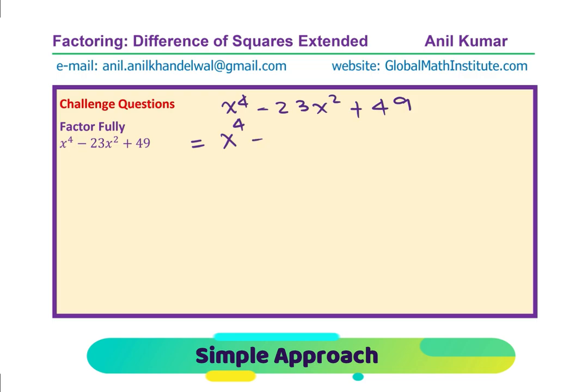One being 7 times 2 which is 14, right? So 14 x square minus 9 x square plus 49. So I am using slightly different strategy but it is the same thing, right? So now, I am again rearranging x to the power of 4 minus 14 x square plus 49 minus 9 x square.